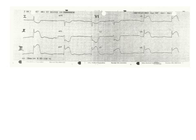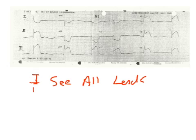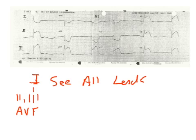I'd like to take you through the process of looking at a 12-lead ECG and making sense of it. From my prior videos, I talked about the technique I like to use: the 'I See All Leads' technique. The I stands for inferior, and I look at the inferior wall first — that's leads 2, 3, and augmented vector front. That's the right coronary artery, which looks primarily at the inferior wall of the left ventricle and the right ventricle.